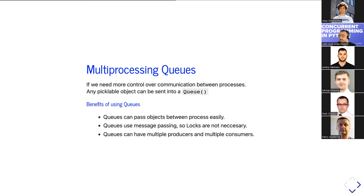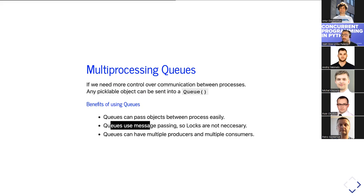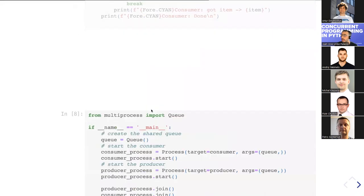Some benefits of queues: we can pass objects simply, we can share queue objects between processes, and since we're passing messages rather than sharing state, we don't need to worry about locking shared context. Let's look at the code — three pieces that all interact.